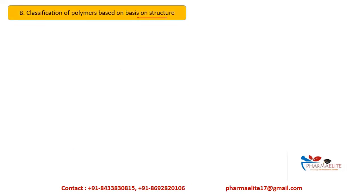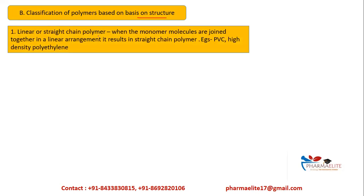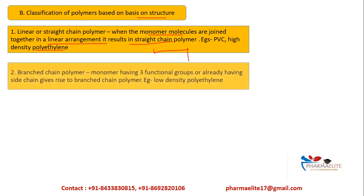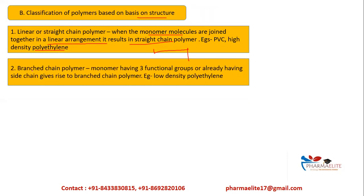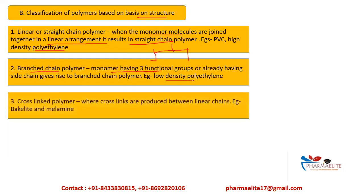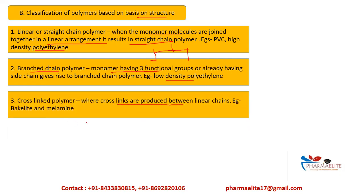The next classification is based on structure. Linear or straight-chain polymers have monomer molecules joined in a linear arrangement — examples are PVC and high-density polyethylene. Branched-chain polymers have monomers with three functional groups or side chains that lead to branching — an example is low-density polyethylene. Cross-linked polymers have cross-links produced between linear chains — very important examples are Bakelite and melamine.